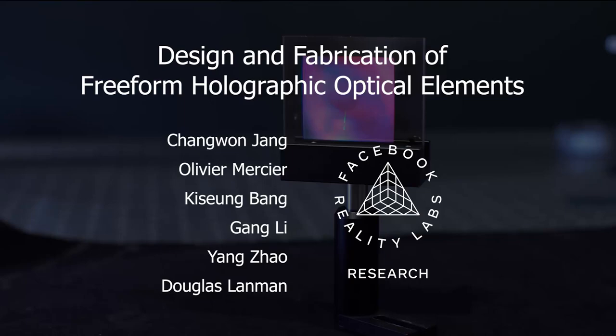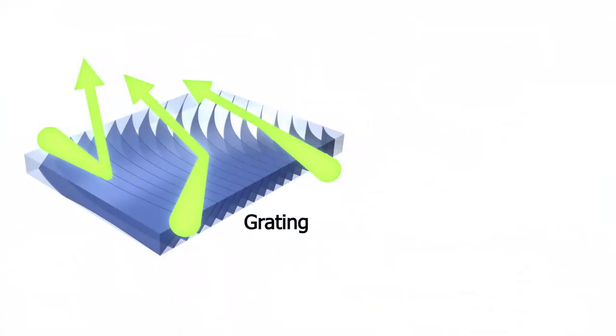We present a method to design, optimize, and fabricate freeform holographic optical elements, or HOEs. HOEs are thin sheets of polymer, about 10 micrometers thick, on which a volume grating can redirect incoming light in highly controllable ways.